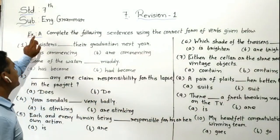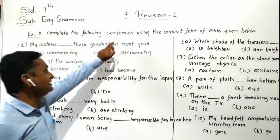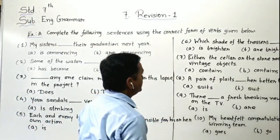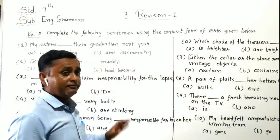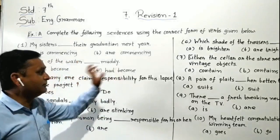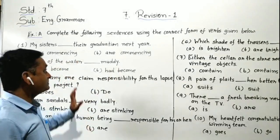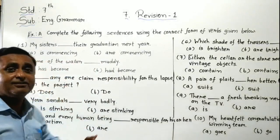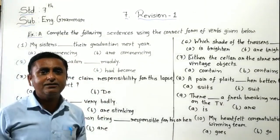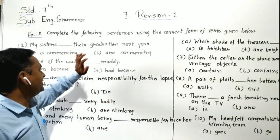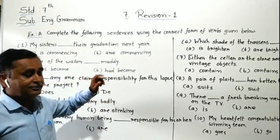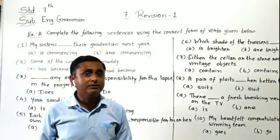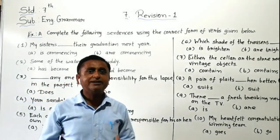Exercise A: complete the following sentences using the correct form of verbs given below. We have to complete the blanks with the options given here. We have to select the correct option and make the complete sentences.